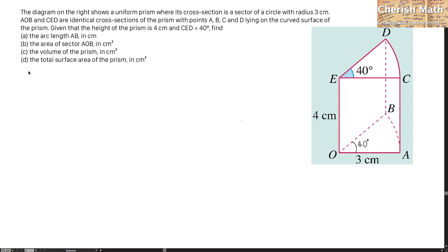Let me solve part A using the formula S = Rθ. S stands for the arc, which in our case is the length of AB. R is the radius at 3 cm, and θ is the angle in radians, which I have to convert from 40 degrees. That is 40/180 × π radians. The answer for arc AB is 2.094 cm.